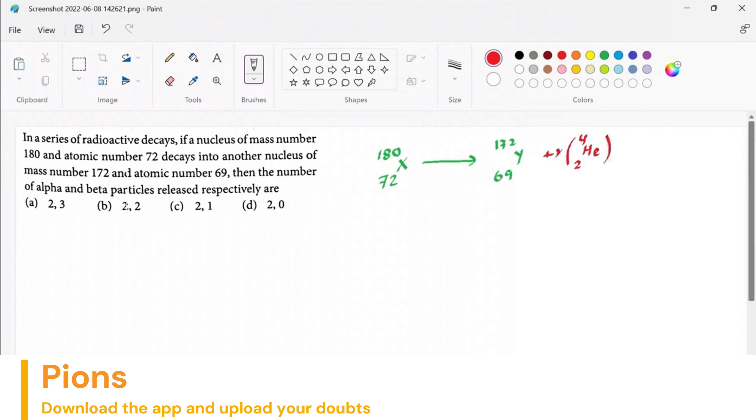We have to find how many it will be, plus beta particles. Beta particle is simply an electron, so it will be e and how many elements, y elements. So y beta particles are there which are coming out. This is our general equation.